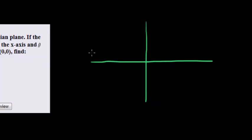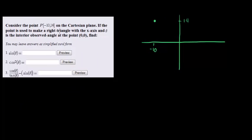First of all, we plot our point at negative 10 and 14, so we have our point there. They say that this point is used to make a triangle, a right triangle with the x-axis. So in other words we go down to the x-axis to make our 90 degree angle there, and then we connect it with the origin.